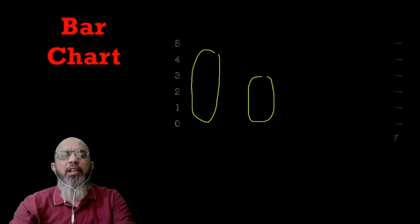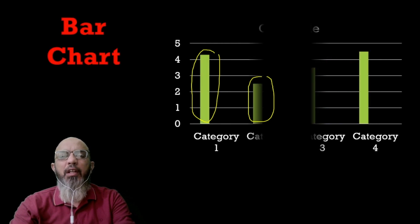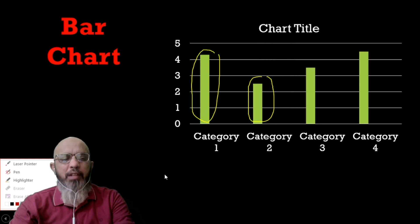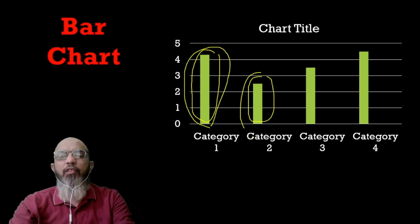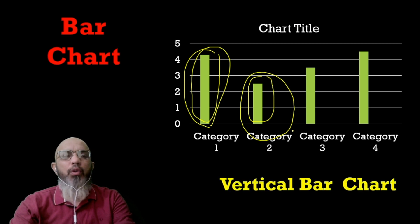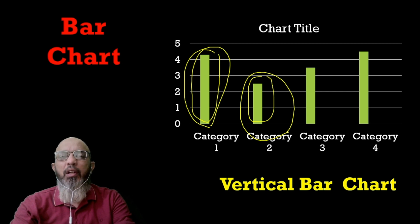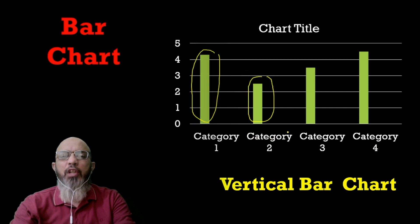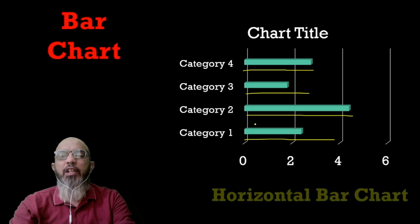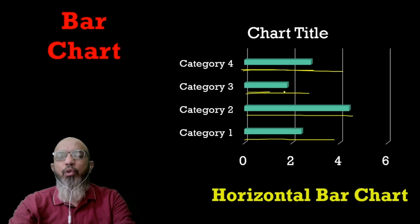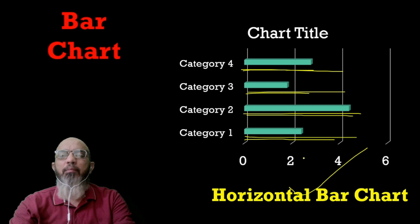First, we see the bar chart — the data is shown with long bars. If it is in the vertical form then we call it a vertical bar chart. You studied this type of chart in the previous class as well. Similarly, there is another type of bar chart — the horizontal bar chart — where the data is shown in horizontal bars, and we call it a horizontal bar chart.